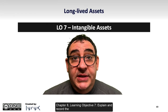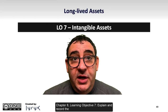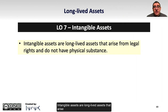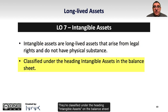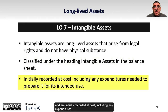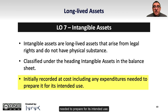Chapter 8, Learning Objective 7: Explain and Record the Acquisition and Amortization of Intangible Assets. Intangible assets are long-lived assets that arise from legal rights and don't have any physical substance. They're classified under the heading Intangible Assets on the balance sheet and are initially recorded at cost, including any expenditures needed to prepare for their intended use.